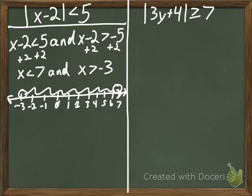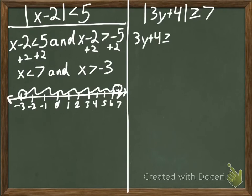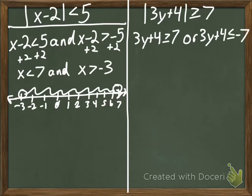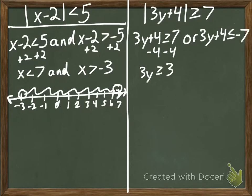The second example: we have the absolute value of 3y plus 4 is greater than or equal to 7. It's a greater than or equal to, so that means our word is going to be 'OR.' So we have 3y plus 4 is greater than or equal to 7, OR 3y plus 4 — we're going to flip the inequality and change the sign of our C — so 3y plus 4 is less than or equal to negative 7. Then we solve. 7 minus 4 is 3; divide by 3. So we get y is greater than or equal to 1.